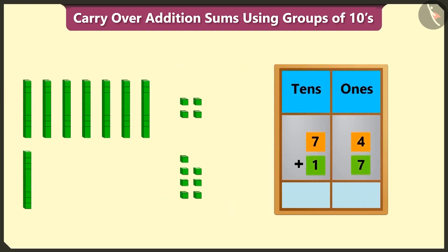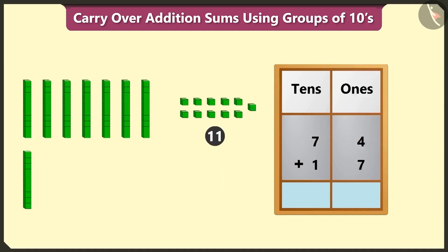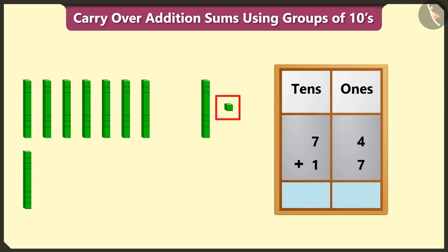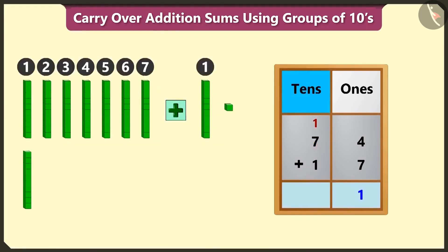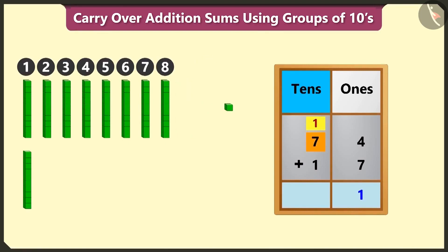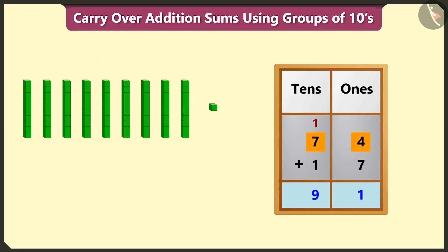After writing both numbers in the ones and tens boxes, adding 4 and 7 in the ones box makes 11 — that is 1 ten and 1 one. We write 1 one in the ones box and carry over 1 ten. Then adding 7 and the carry-over 1 equals 8, and adding 1 to 8 equals 9. So we write 9 in the tens box. 74 added to 17 gives a total of 91.